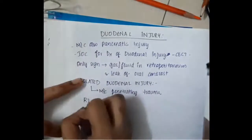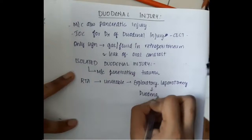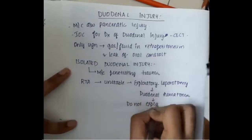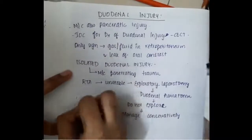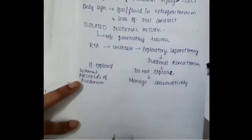Isolated duodenal injury occurs due to penetrating trauma. If a road traffic accident patient is hemodynamically unstable, FAST is positive, and exploratory laparotomy reveals a duodenal hematoma — do not explore it. You must manage it conservatively, as it will resolve itself. If you try to explore the hematoma, it may cause ischemia and necrosis of the duodenum.